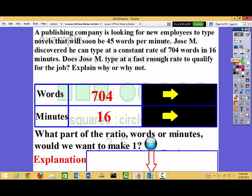Publishing company is looking for new employees to type novels that will soon be 45 words per minute. Jose Martinez discovered that he can type at a constant rate of 704 words in 16 minutes. Does Jose Martinez type fast enough to qualify for the job? Explain why or why not. What I want to do is I have to find the unit rate. That's actually what it's telling me to do right here. 45 words per minute. So I need to compare how fast Jose types per minute to this expectation of 45.